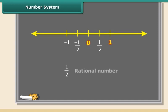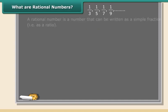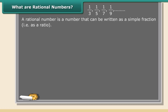Come along to know more. A rational number is a number that can be written as a simple fraction, that is, as a ratio. So a rational number looks like this: p upon q. Remember, q cannot be equal to zero.